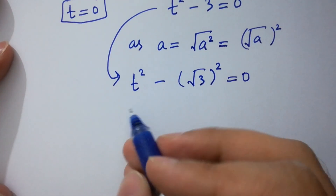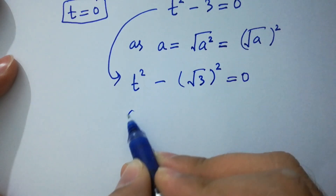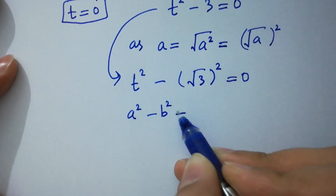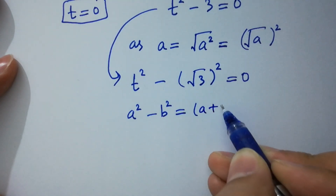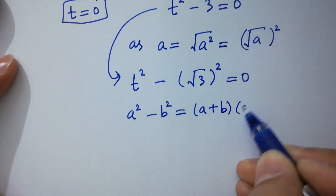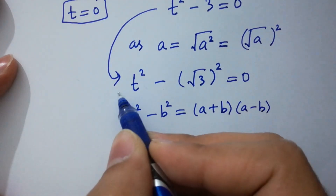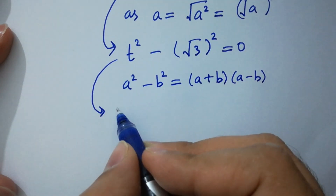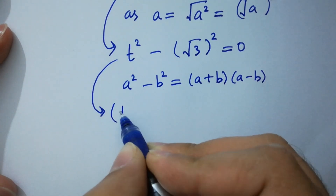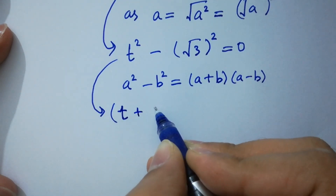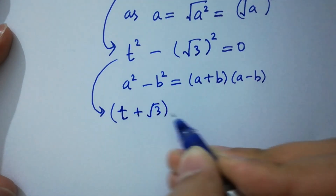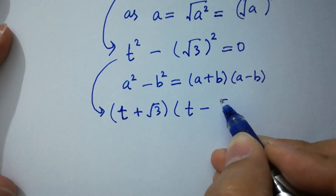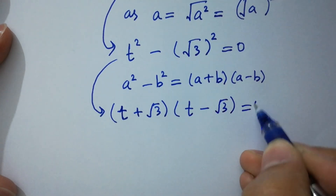For case 2, we use the difference of squares identity: a squared minus b squared equals (a plus b)(a minus b). We have t squared minus 3 equals 0, giving us (t plus square root of 3)(t minus square root of 3) equals 0.